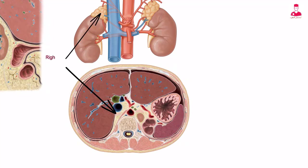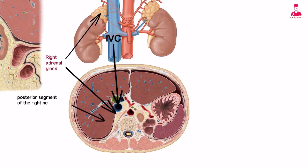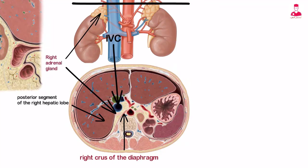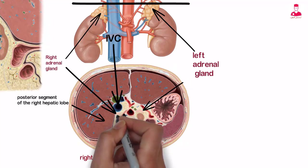The right adrenal gland is located just posterior to the IVC, medial to the posterior segment of the right hepatic lobe, and lateral to the right crus of the diaphragm. It is generally lower and more medial than the left adrenal gland and commonly appears as an inverted V in cross-section.